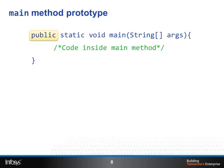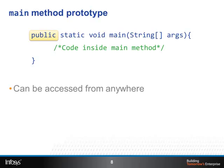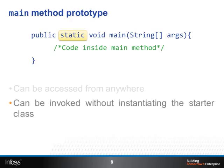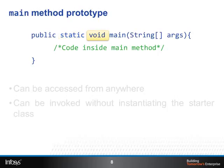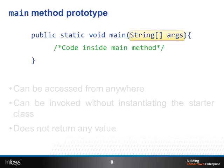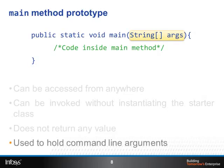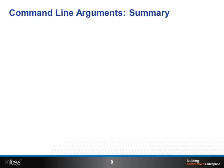Having understood command line arguments, let us revisit the main method prototype. The main method is declared public, hence it can be accessed from anywhere. The keyword static ensures that the main method can be invoked without instantiating the starter class. The return type void indicates that the main method does not return any value. The parameter String args, that is an array of strings, is used to hold the command line arguments.